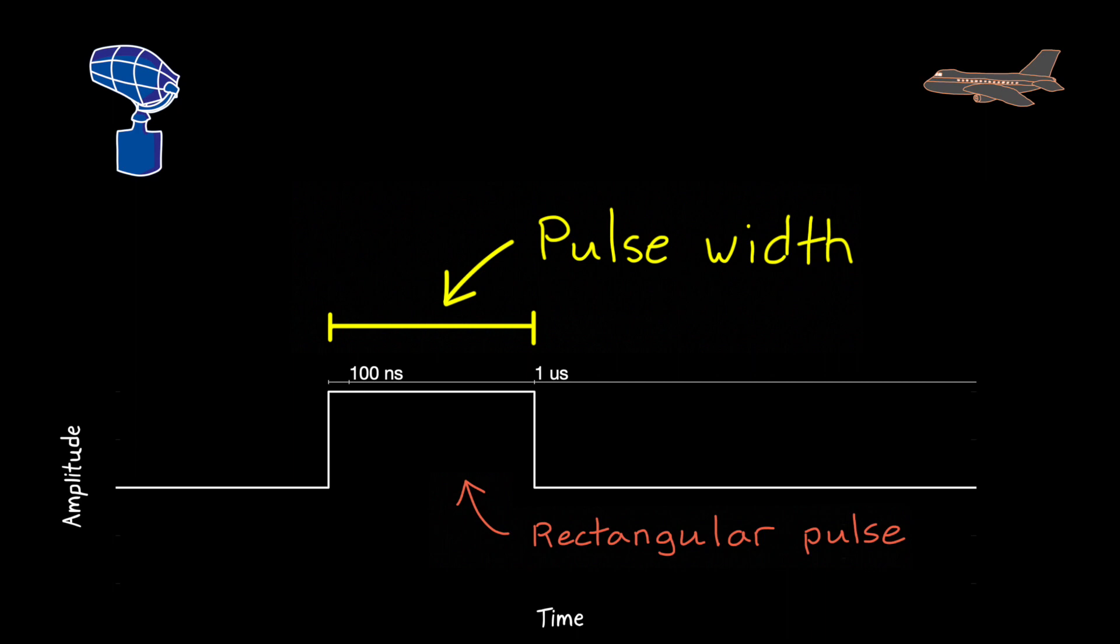In a pulsed radar system, the pulse has to radiate out, reflect off of an object, and return to the radar before the next pulse is sent. This is so that there's no ambiguity as to which pulse the echo belongs to. It's always the pulse that was just sent.